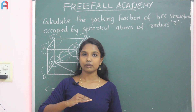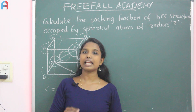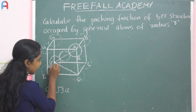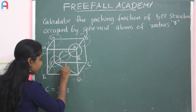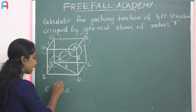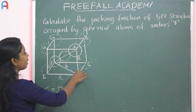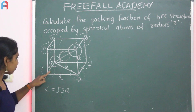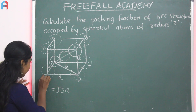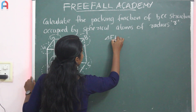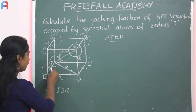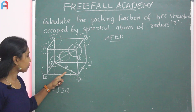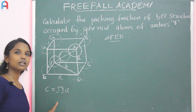The packing fraction is the volume occupied by atoms in the unit cell divided by the total volume of the unit cell. We consider the cube with edge length A. From triangle FED, it is a right-angled triangle. Using the Pythagorean theorem, the hypotenuse B squared equals A squared plus A squared, so B equals root 2 times A.